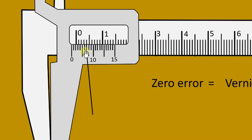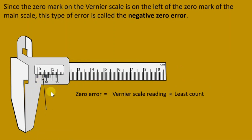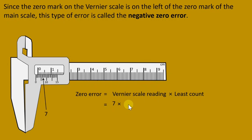We read from zero up to that line: one, two, three, four, five, six, seven — meaning the Vernier scale reading is seven. Substituting into the formula: zero error = 7 × 0.01 cm (the least count for a centimeter Vernier caliper) = 0.07 cm. So the zero error is 0.07 cm.